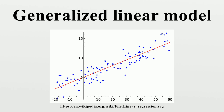Imagine, for example, a model that predicts the likelihood of a given person going to the beach as a function of temperature. A reasonable model might predict that a change in 10 degrees makes a person 2 times more or less likely to go to the beach. But what does twice as likely mean in terms of a probability? It cannot literally mean to double the probability value. Rather, it is the odds that are doubling — from 2 to 1 odds, to 4 to 1 odds, to 8 to 1 odds, etc.